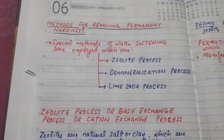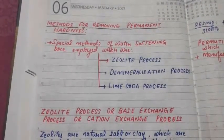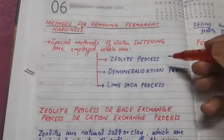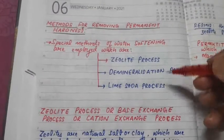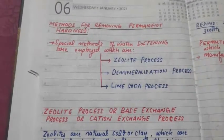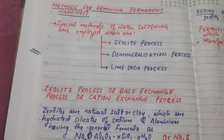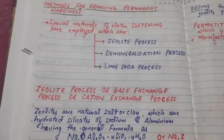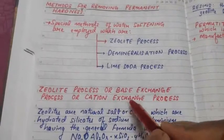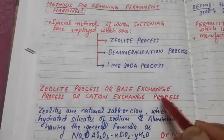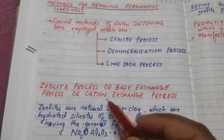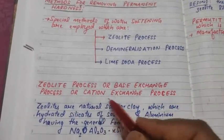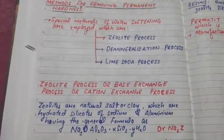There are different advantages and disadvantages to each. We will study these three methods one by one. The zeolite process is also called the base exchange process or cation exchange process.